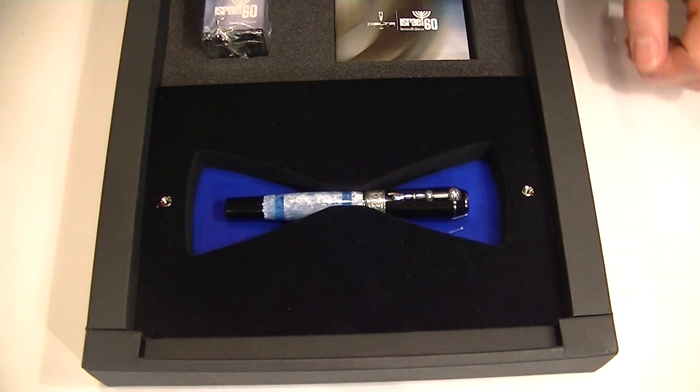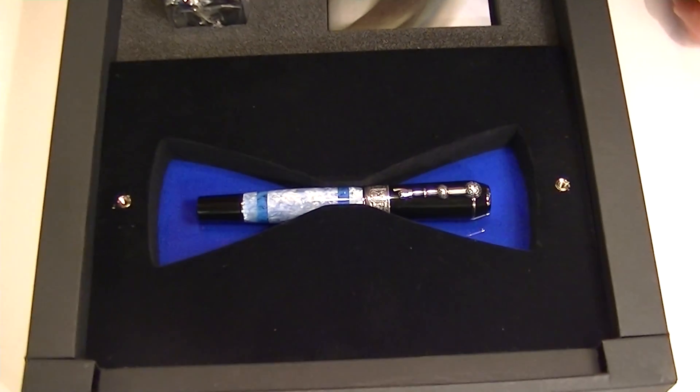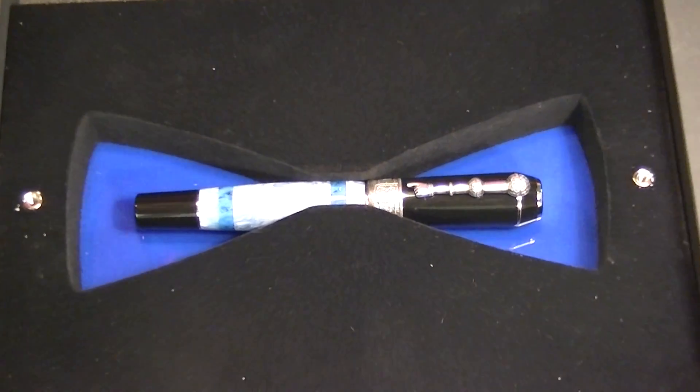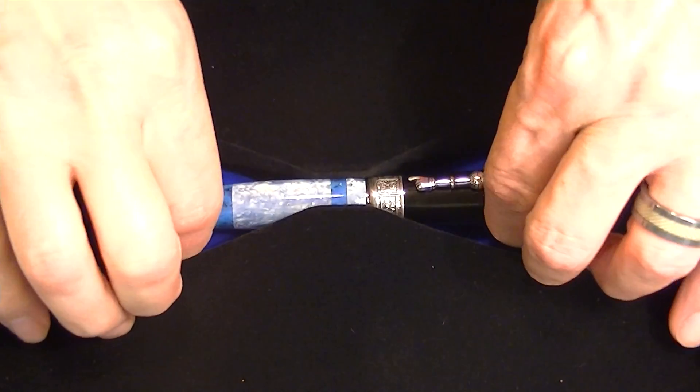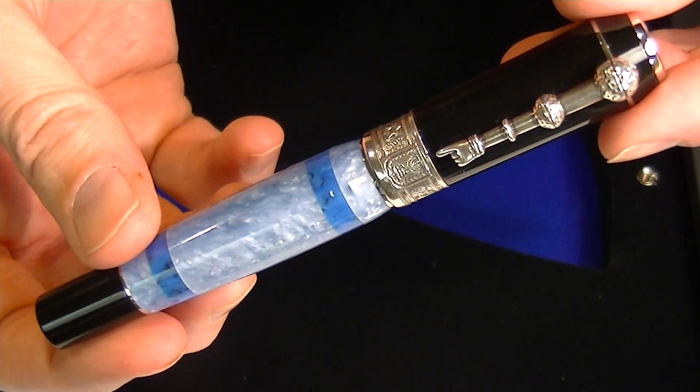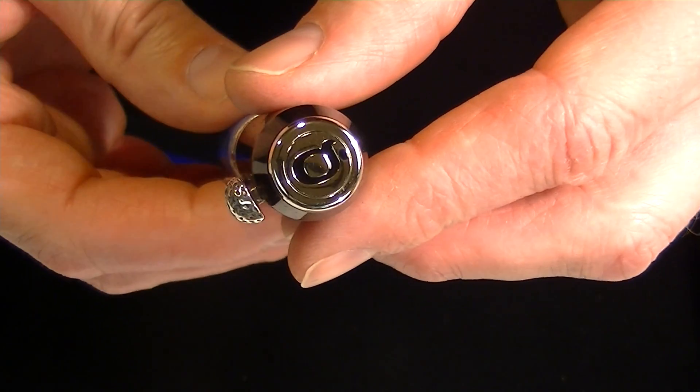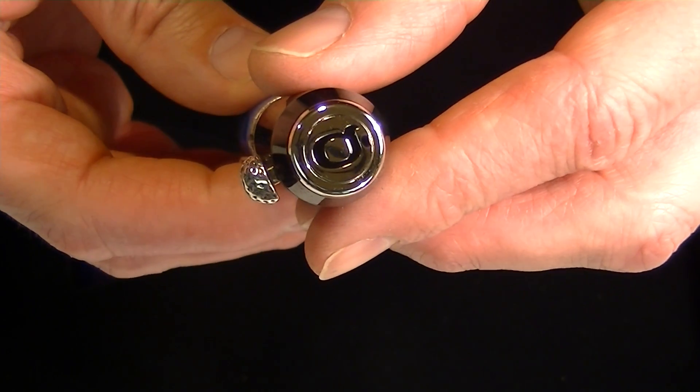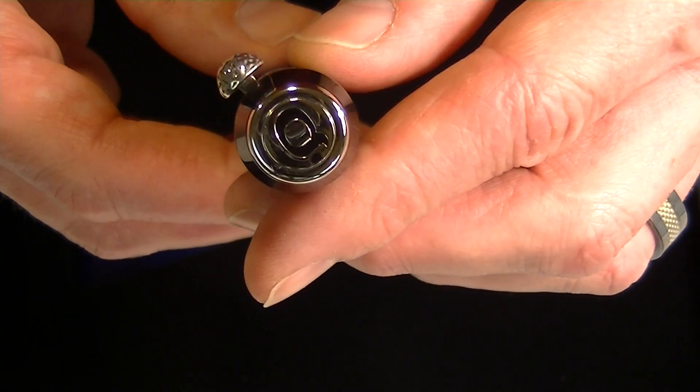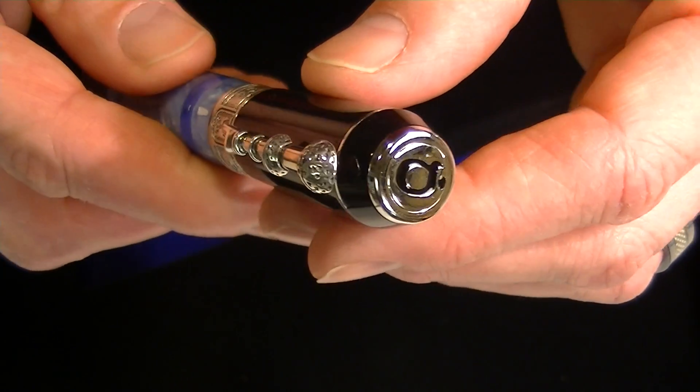Inside we have the Delta Israel 60th Anniversary Fountain Pen. This is the limited edition version of the pen. At the top of the pen we have the Samet, which is the 15th letter of the Hebrew alphabet. It represents 60.